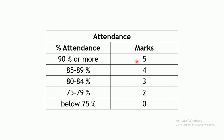Attendance of 90% or more will be allotted full 5 marks. Attendance of 85–89% will be allotted 4 marks. Attendance of 80–84% will receive 3 marks. Attendance of 75–79% will receive 2 marks. Any percentage below 75% will lead to loss of all 5 marks.